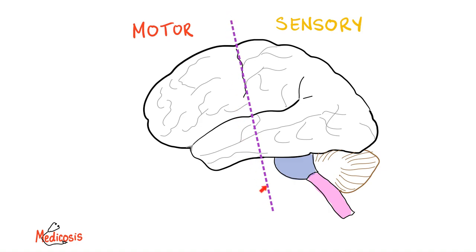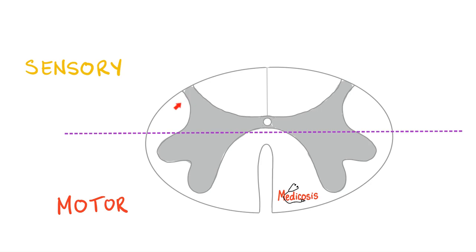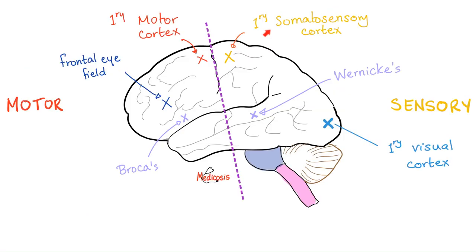You draw an imaginary line in your brain. Anything in front of it is motor; anything behind it is sensory. It's as simple as that. You can do the exact same thing to the spinal cord — imaginary line, anything in front is motor, anything behind is sensory. This is your primary somatosensory cortex — it's behind the line, so it's sensory. The primary motor cortex is in front of the line, so it's motor.